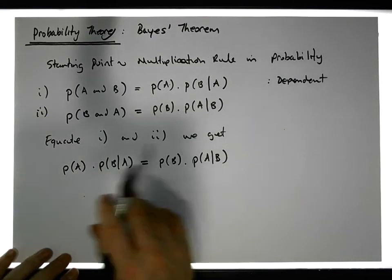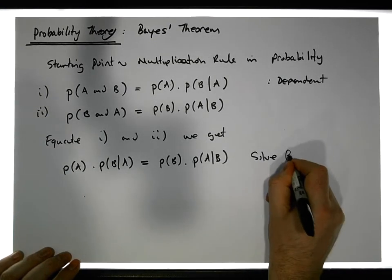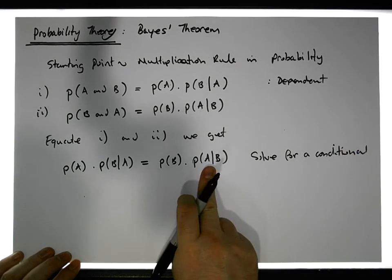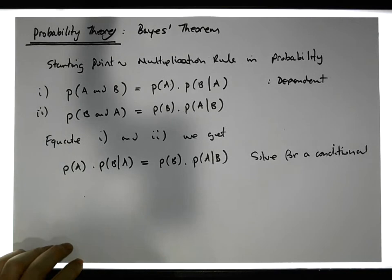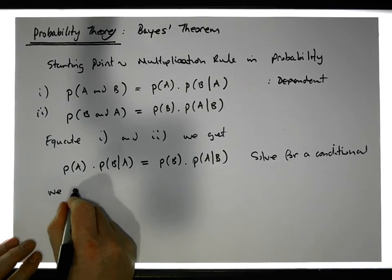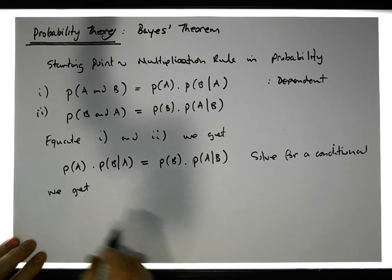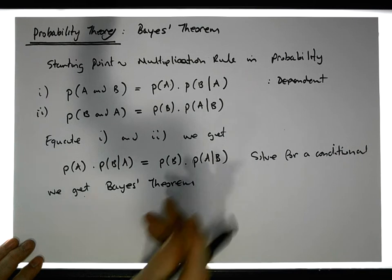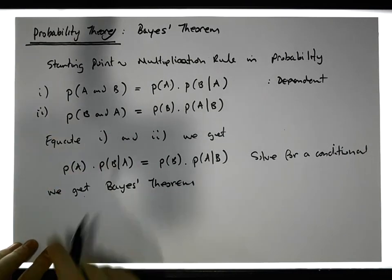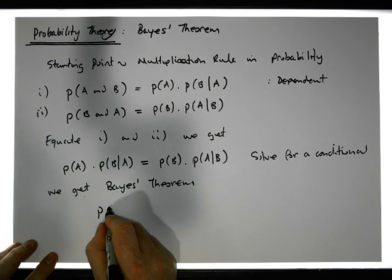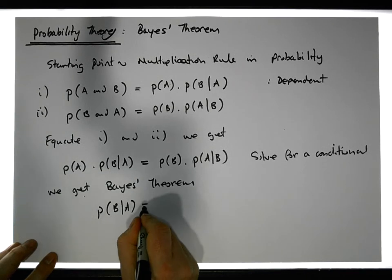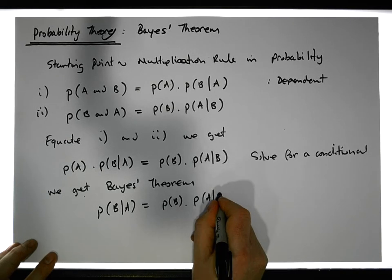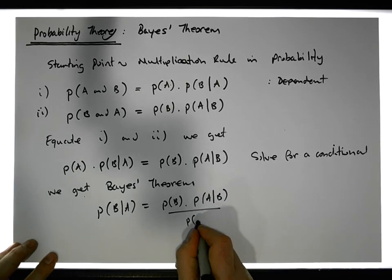If we solve for one of the conditionals, we get what's known as Bayes' theorem. In a form where we've labeled the events as A and B, the probability of B given A is equal to the probability of B times the probability of A given B, divided by the probability of A.